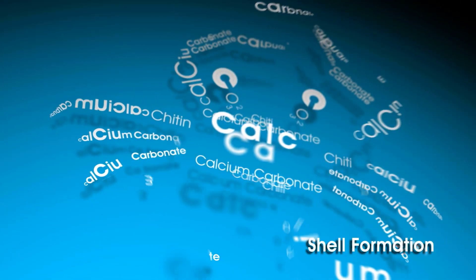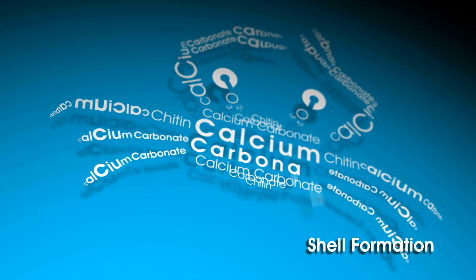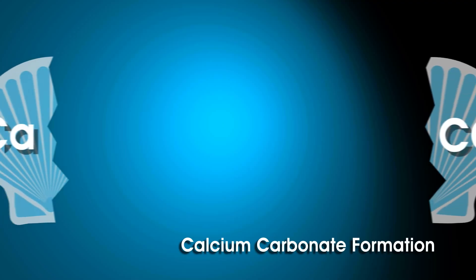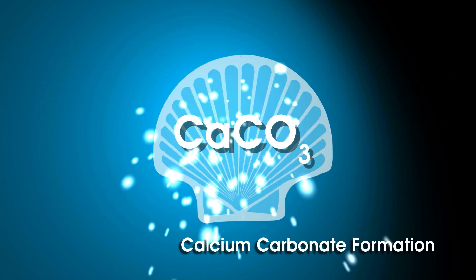Let's start by looking at the formation of shells and animals. The shells of animals, like crabs, are formed primarily of calcium carbonate. Calcium carbonate is formed when calcium ions bind with carbonate molecules.